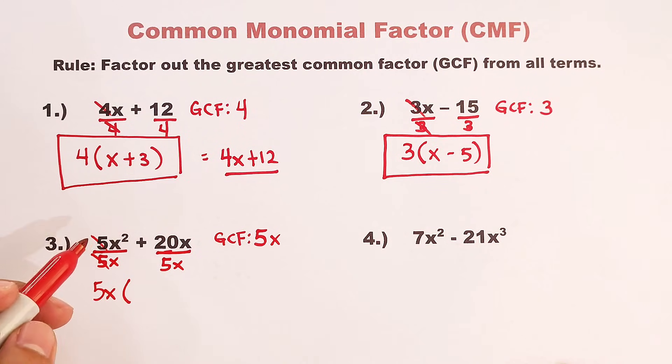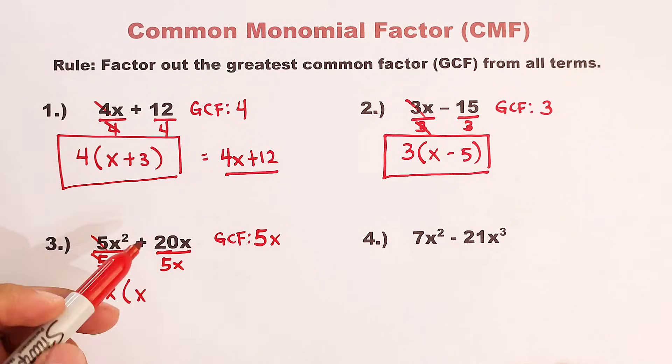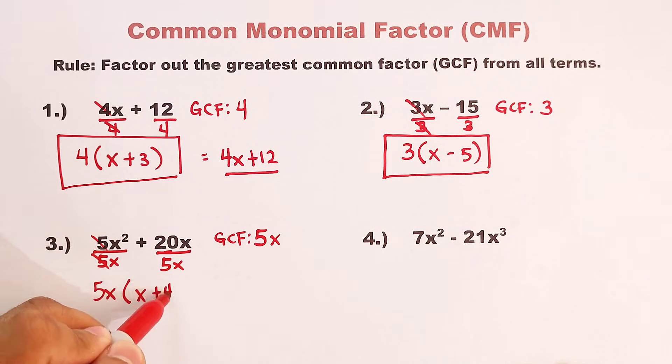And then your x squared divided by x is simply x. And as for this, 20 divided by 5 is plus 4. Then we can simply cancel out x and cancel out x. And now, the factors are 5x times x plus 4.